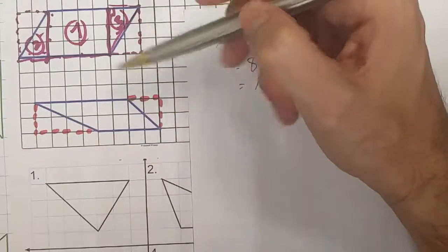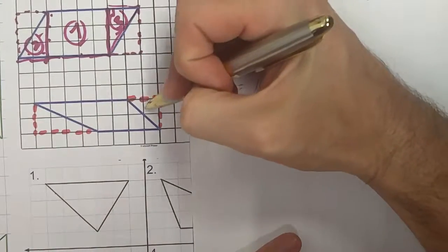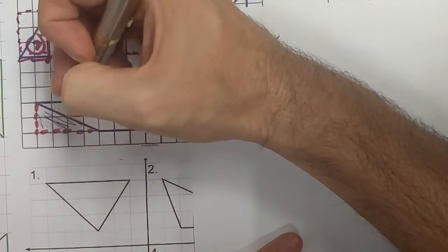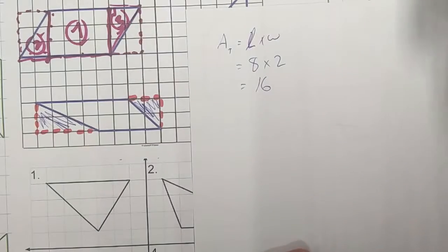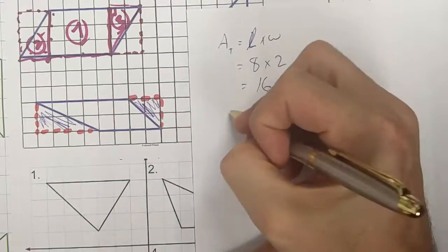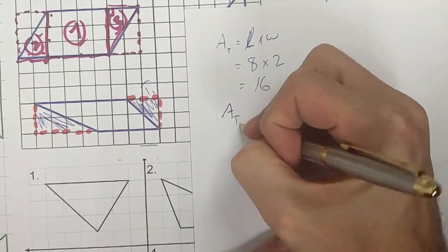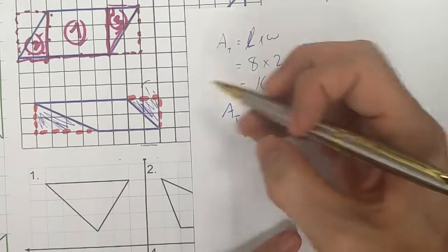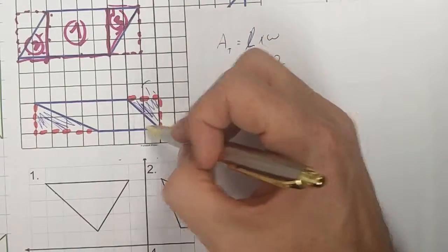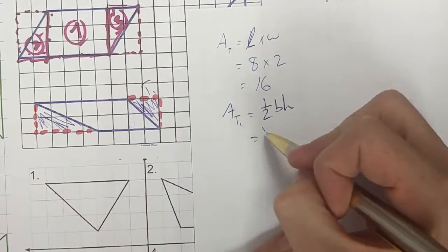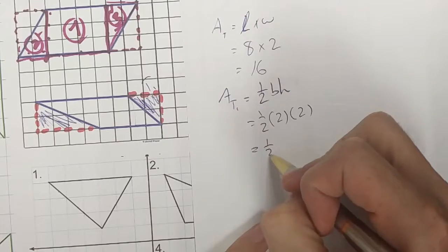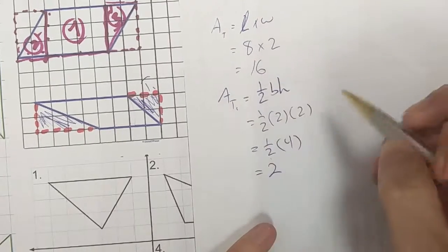Now, to find the area of my shape, all I need to do is take away the area of this triangle here and the area of this triangle here. The area of Triangle 1 — I know the area of a triangle is half the area of a rectangle. This rectangle has a base of 2 and a height of 2, so the area is half of 4, which is 2.